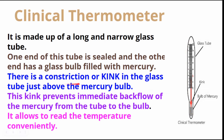There is a constriction or kink in the glass tube just above the mercury bulb. This kink prevents the immediate backflow of mercury from the tube to the bulb, and it also allows you to read the temperature easily.